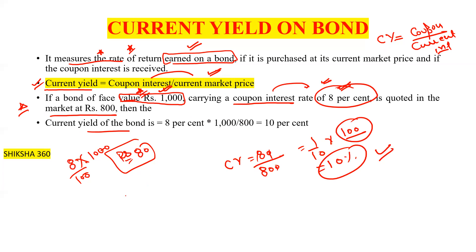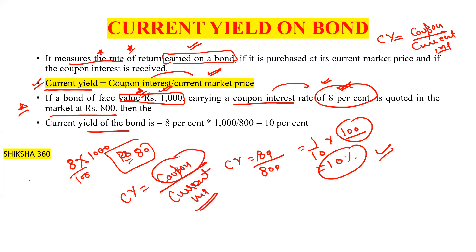Please remember this formula: current yield equals coupon upon current market price. The coupon is given as a percentage, but we take it in the form of value — so 8% of the face value: 8 upon 100 into 1000. Let's practice one or two more questions on this concept so we can understand it properly.